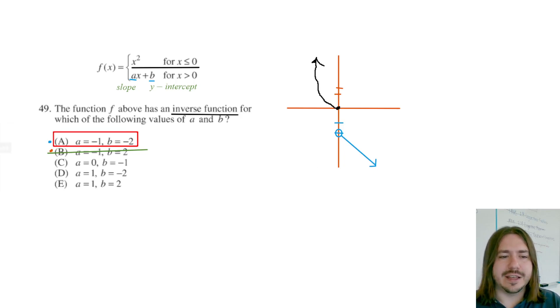For d it says the y intercept is negative two so same y intercept but that the slope is positive one meaning the graph goes up like this and you can see why the inverse of this would not be a function because it would fail once again the horizontal line test. The last option here has a y intercept of two and a positive slope so it's going up to the right and once again it fails the horizontal line test so e doesn't work either.